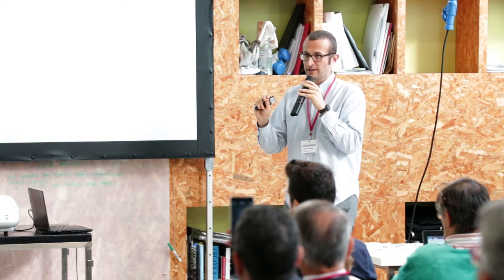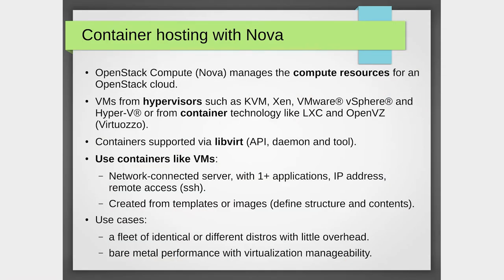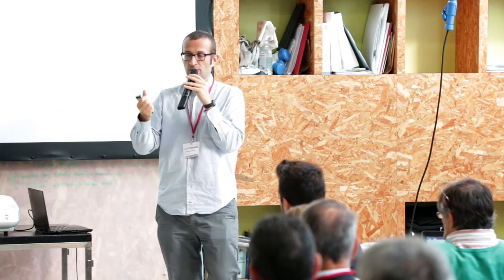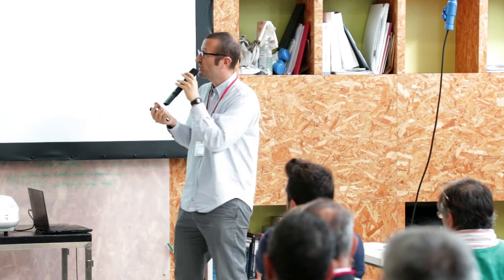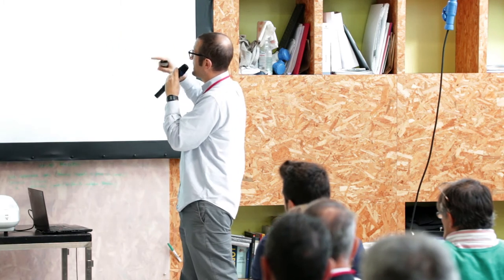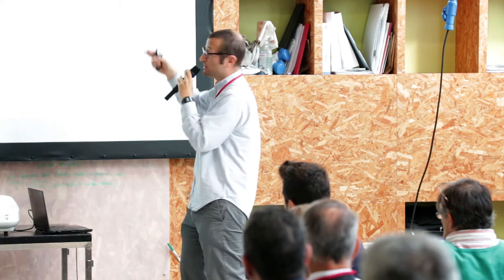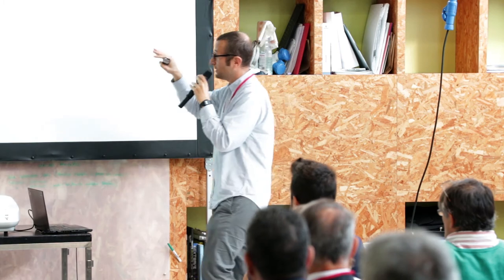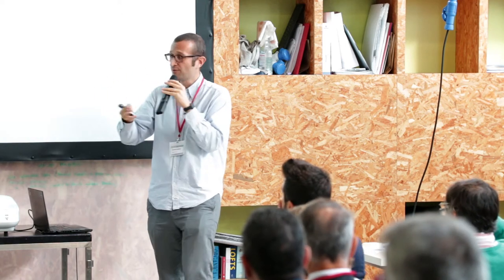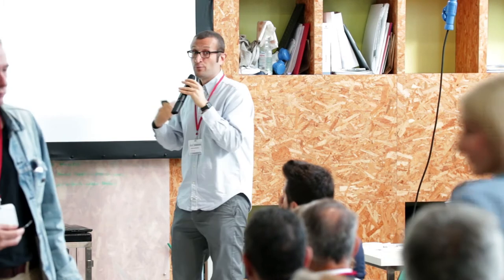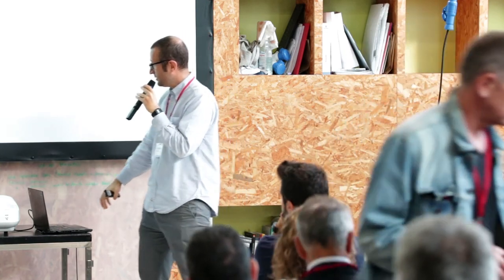Just to make things more nuanced: I said containers are not a replacement for virtual machines, but they can actually be used as virtual machines are used in OpenStack when we get to operating system containers. If we use libvirt — the API and daemon for running cloud instances — with libvirt we can use KVM, VMware vSphere, Hyper-V, and also LXC. So in this particular case, containers can be used like virtual machines: you have a network connection, you can SSH into it, put applications there, and use image templating. This can be done for improving bare metal performance or for running a fleet of identical or different instances with little overhead.